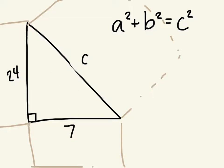So that's why we have to square the numbers, but we're given A and B, but we are missing C. I know that that one's C because it's across from the right angle.